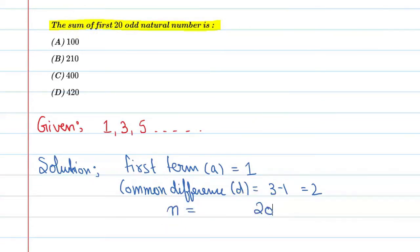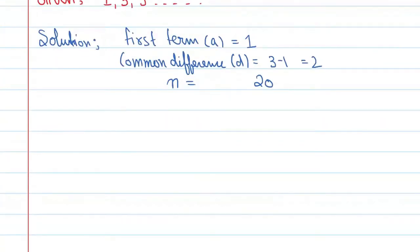So we know that sum of n terms in AP is equal to Sn equals n upon 2, 2a plus n minus 1 into d. So put these values in the formula.